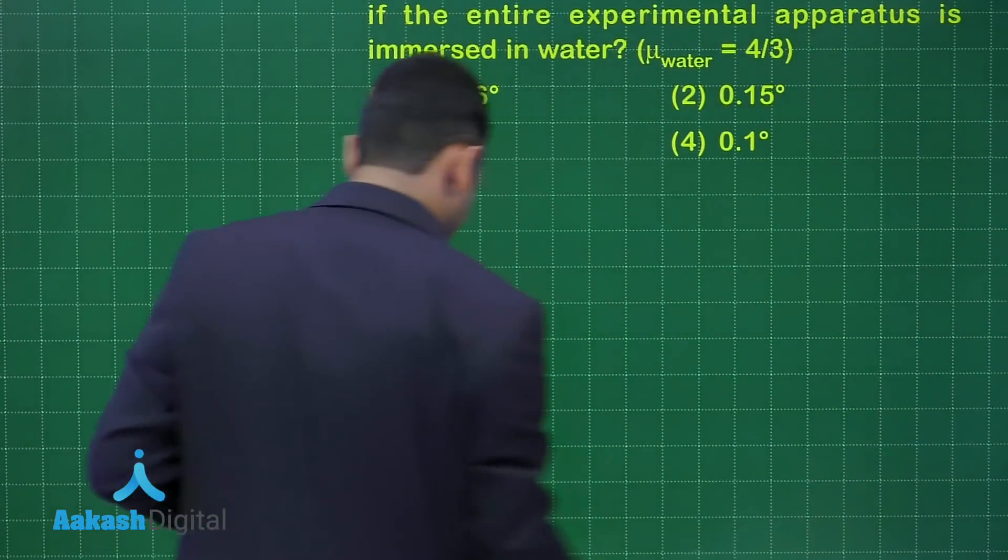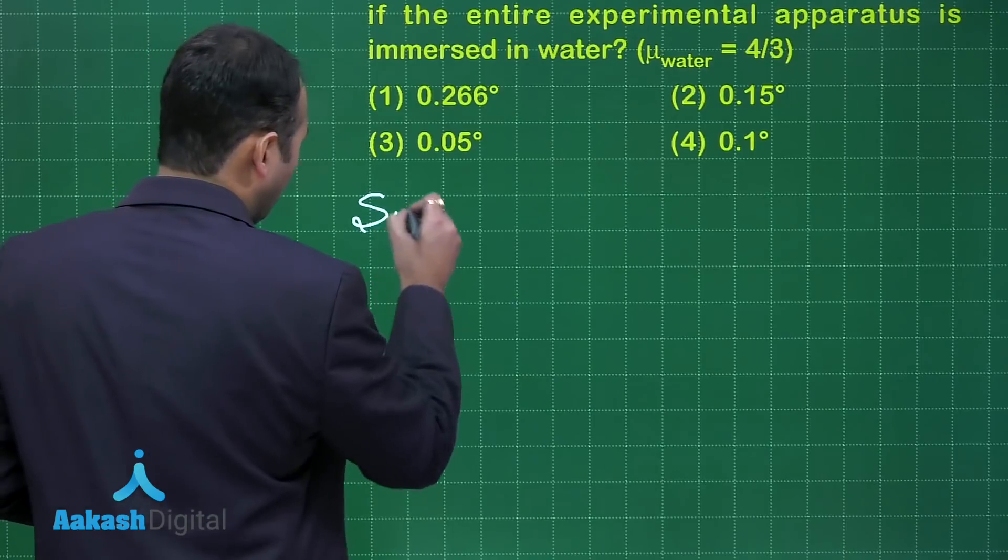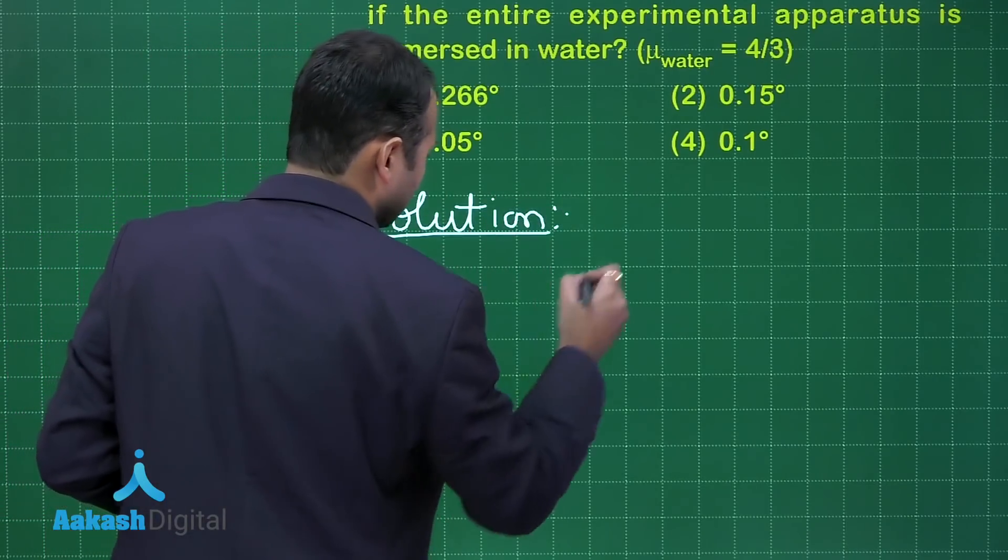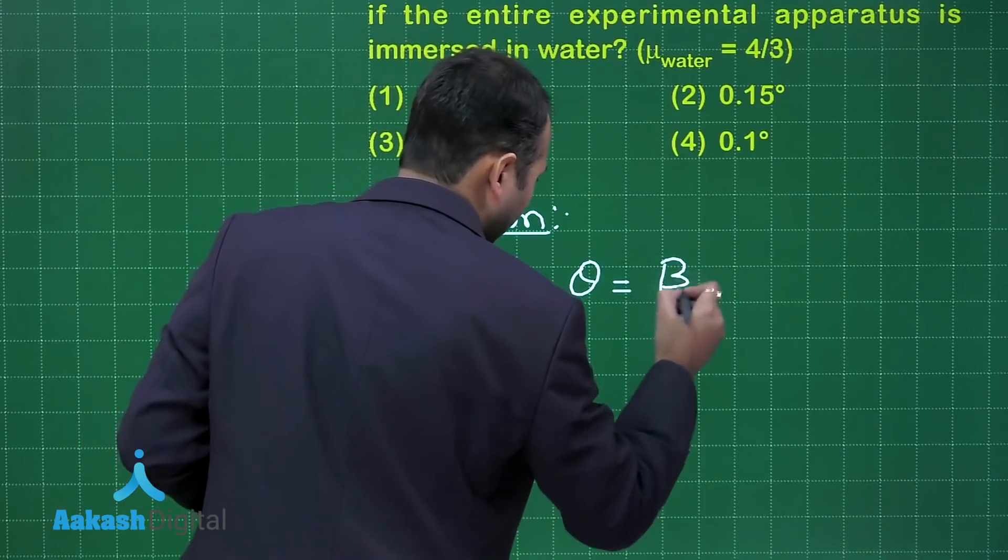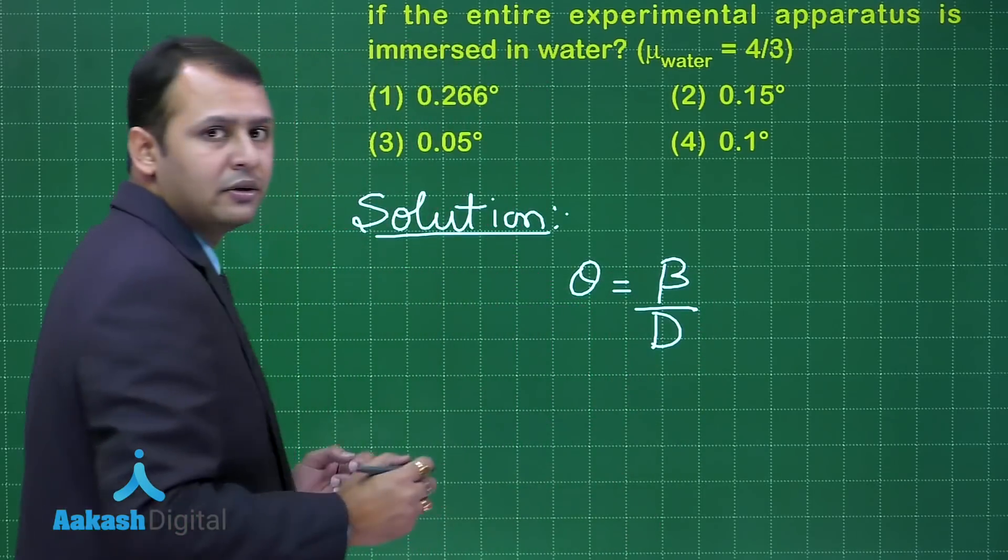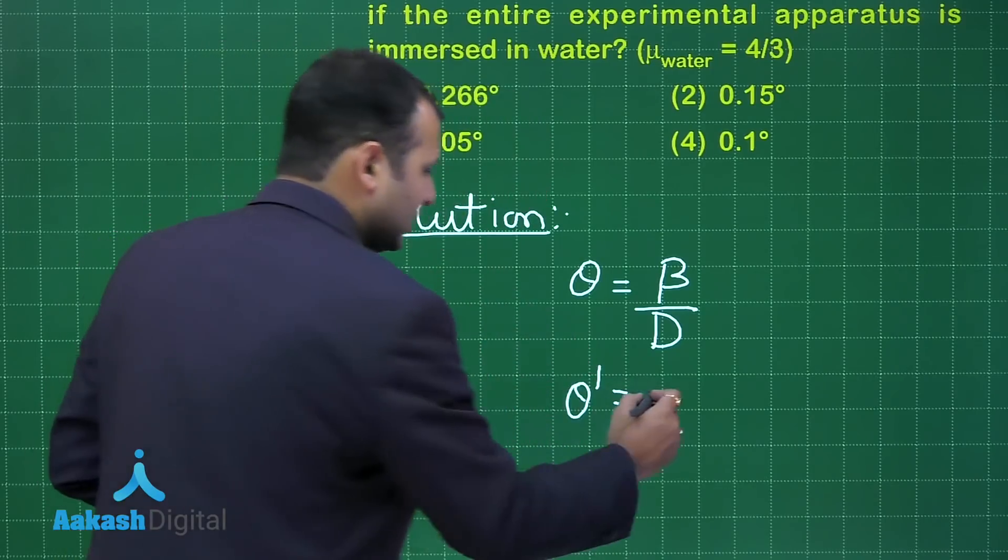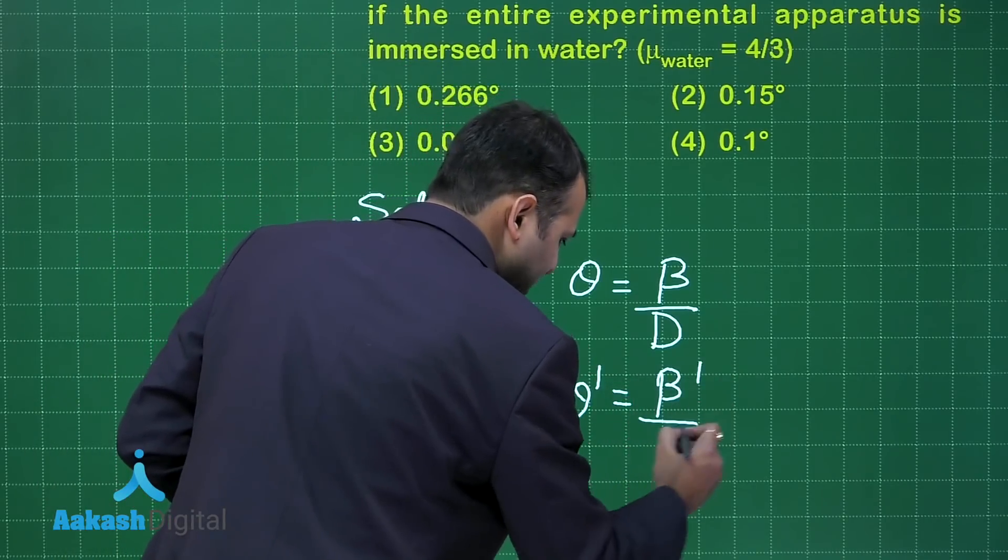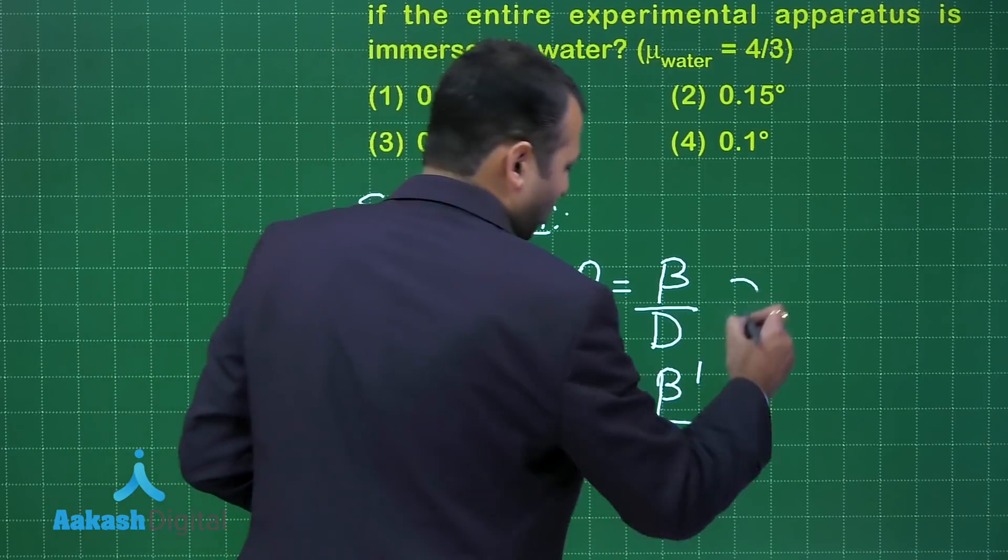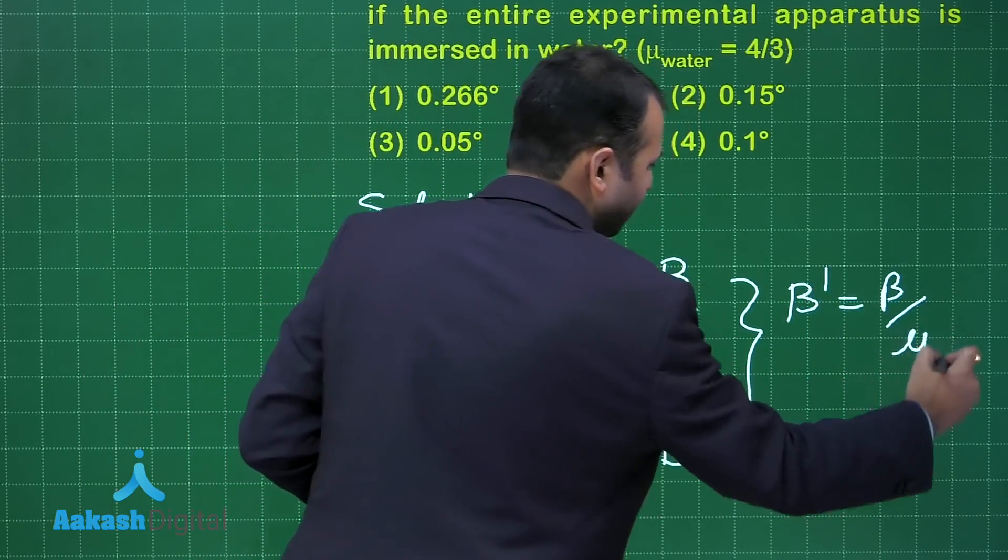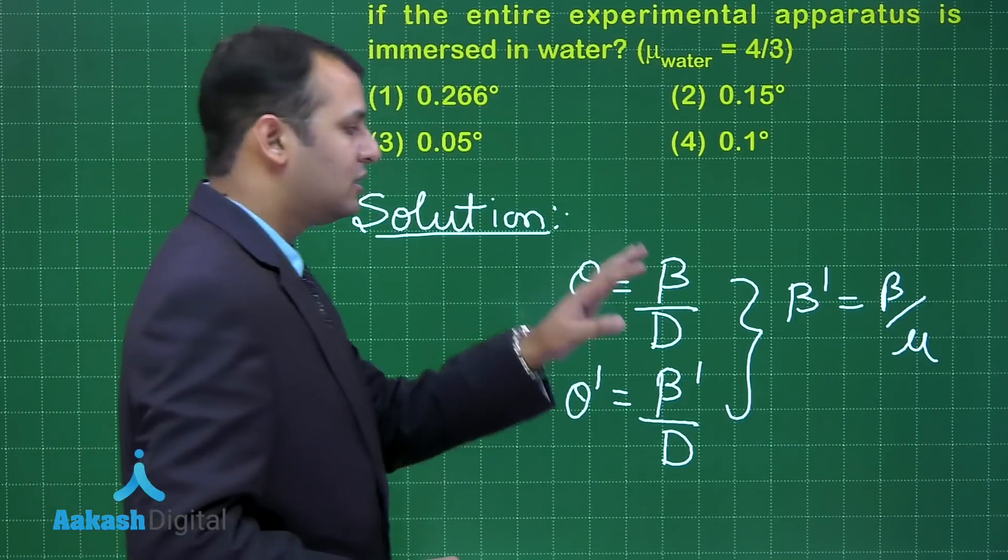So let's start with the solution. I hope you remember the formula for the angular width of a fringe, that is given by beta by d. Now if you talk when the system is immersed in water, in that case it would be beta dash by d, and the only relation between beta dash would be equal to beta by mu because the system is dipped inside the water.